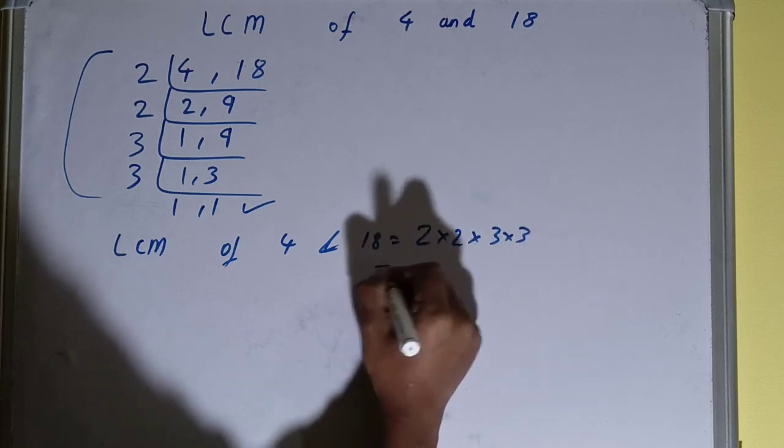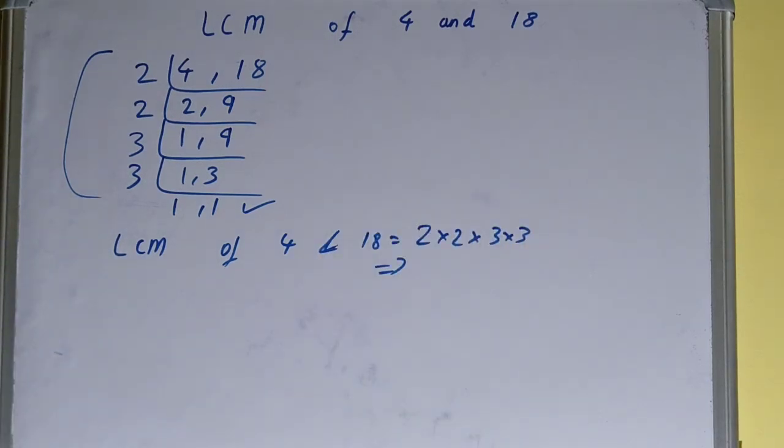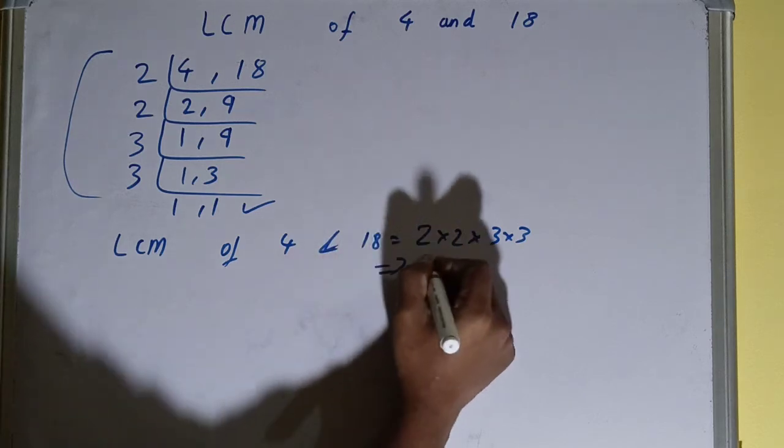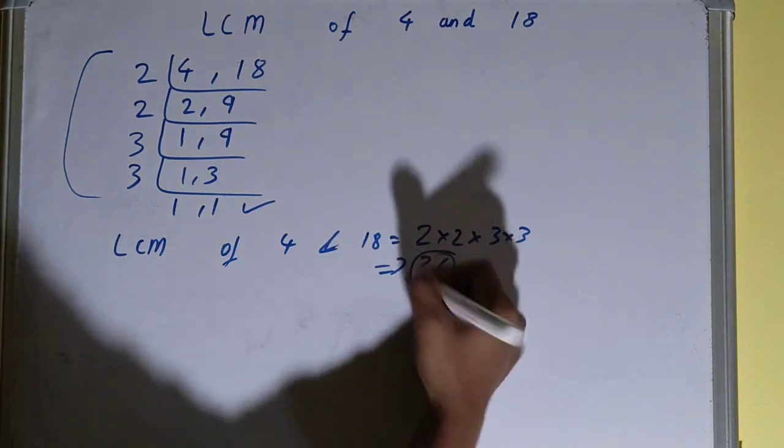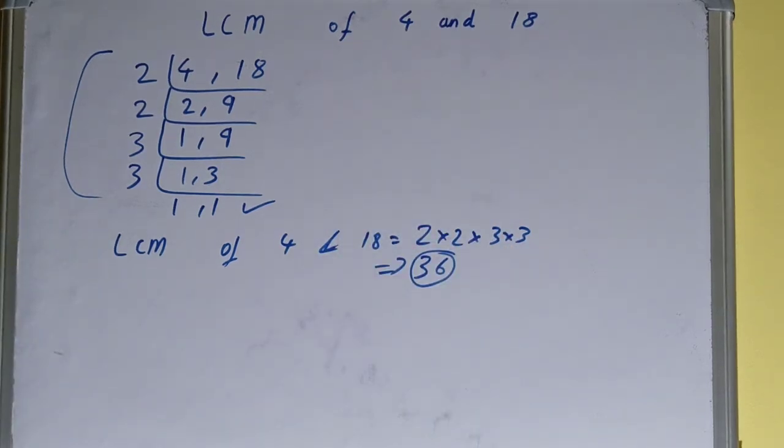Your answer will be: 2 times 2 is 4, 4 times 3 is 12, 12 times 3 is 36. Your answer will be 36, or your LCM will be 36. So this is all about LCM of 4 and 18.